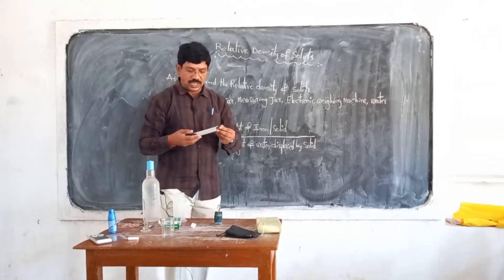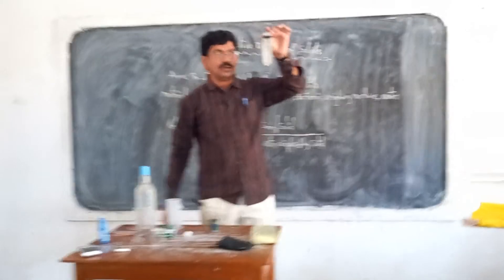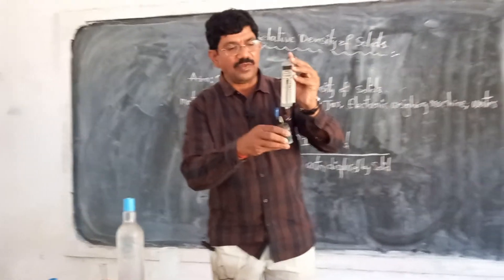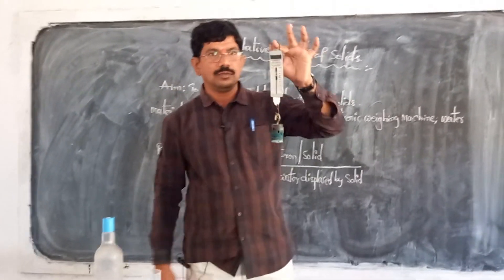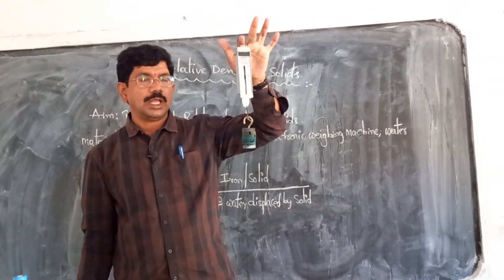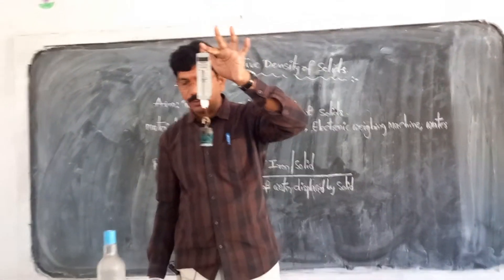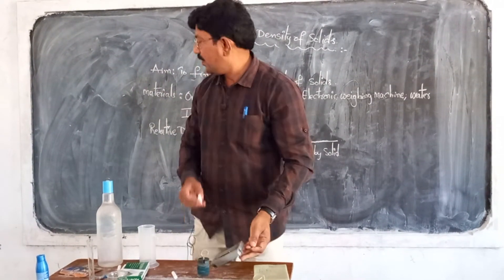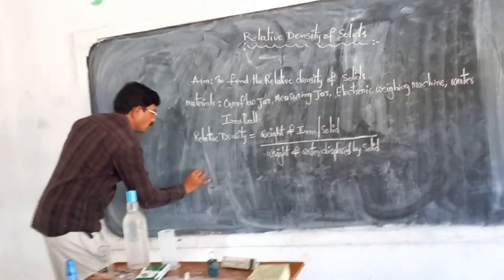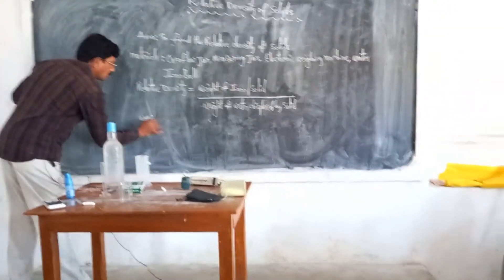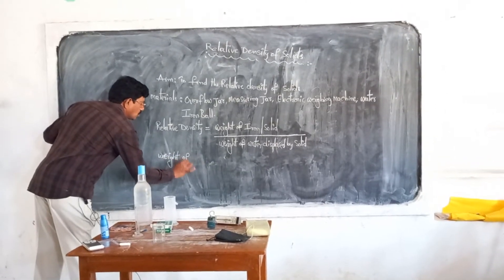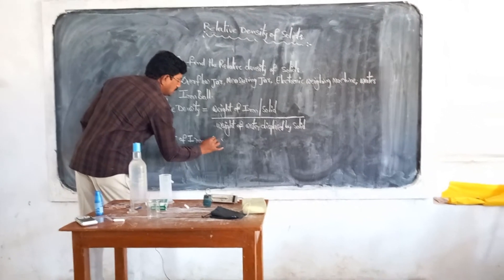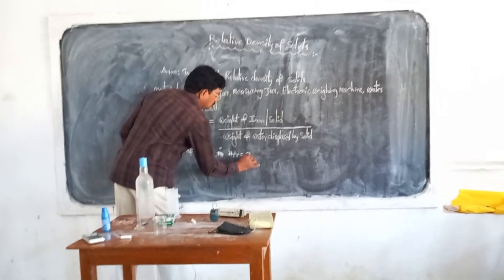Now everyone observe this carefully. What is the reading on the spring balance now? It is zero. Now I am finding the weight of this iron — it is 300 grams. So the weight of this iron object is 300 grams. Here I am writing: weight of iron in air = 300 grams.